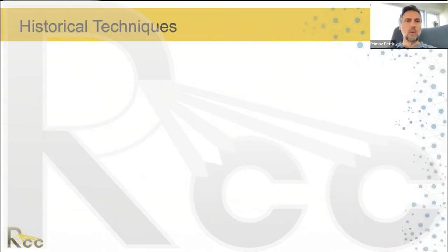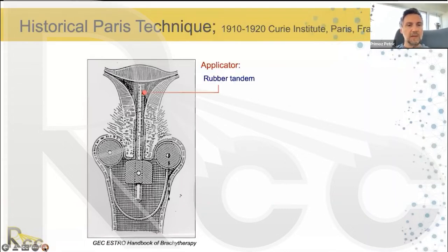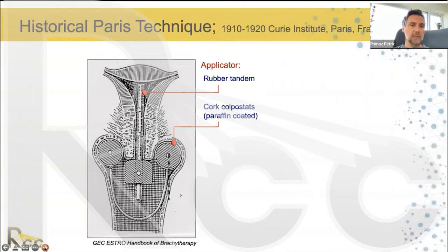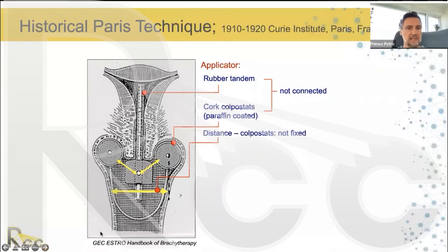When did applicator development actually start? It has been a century since the first brachytherapy for cervical cancer was performed using an applicator at the Institut Curie in Paris, France. That applicator consisted of a rubber tandem inserted inside the uterus and a pair of colpostats inserted into the vaginal fornices on each side. They were made of cork coated with paraffin. The cork colpostats and the rubber tandem were not connected to each other, and the distance between the colpostats was not fixed — it depended on the vaginal dimensions.